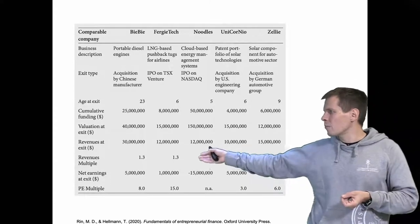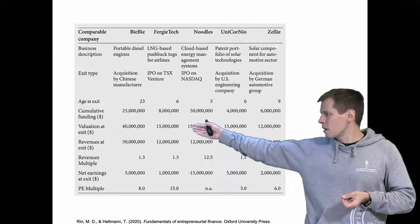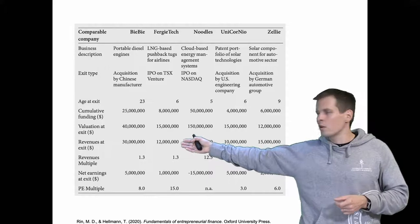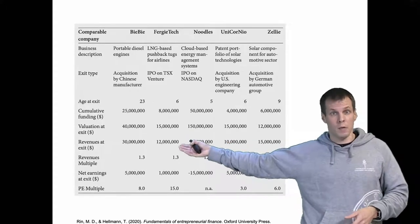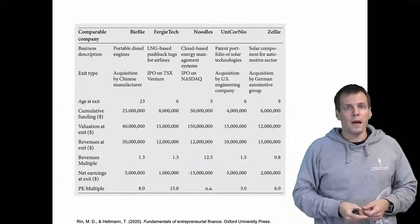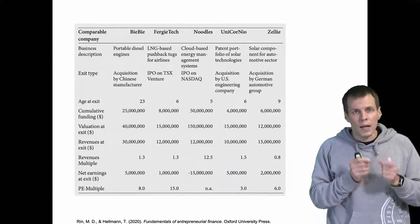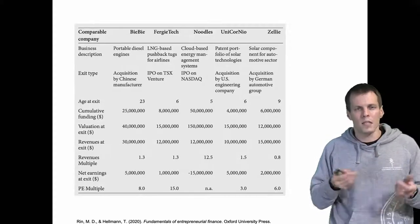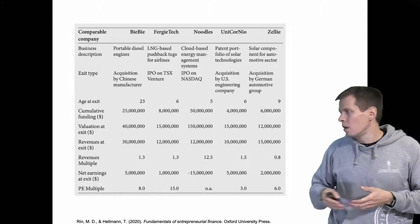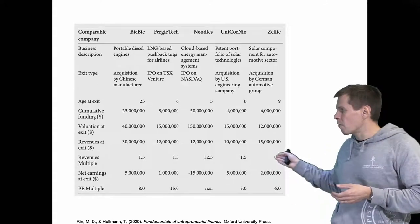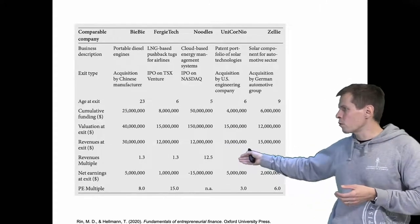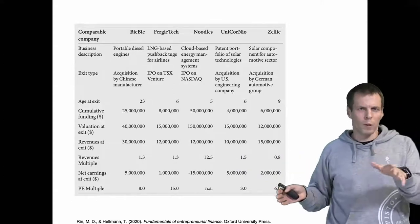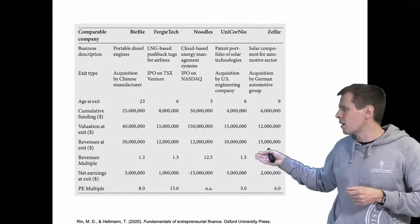The idea of a revenue multiplier is that we take the valuation — for example 40 million — divide it by revenues of 30 million, giving a ratio of 1.3. We can then use that ratio to multiply the revenues of our company to estimate its value. The revenue multipliers in this example range from 0.8 to 12.5, with 1.5 being a typical value.